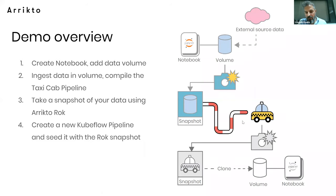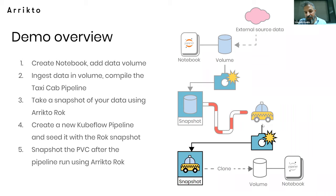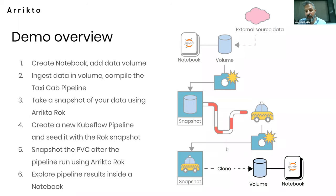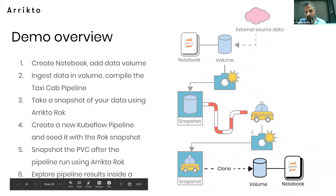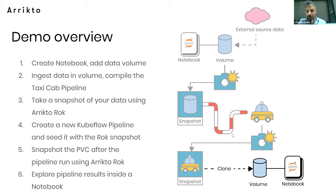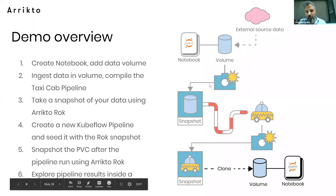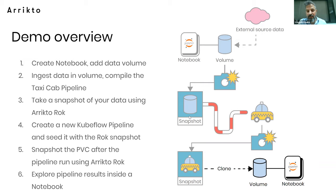Then we'll run the pipeline — a series of preprocessing, training, analysis, and serving steps. We'll also snapshot a step in the pipeline, the final step, so we can explore it by cloning it into a new notebook in the future. This shows we can take any individual step of the pipeline, snapshot it, and explore it again using notebooks. Then we can start the cycle again: explore the data, make fixes, ingest new data, adjust the algorithm, snapshot again, build a new pipeline. We're essentially using Rok as Git for our data.